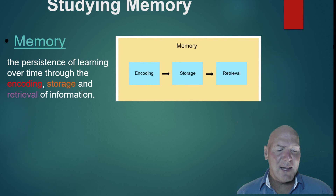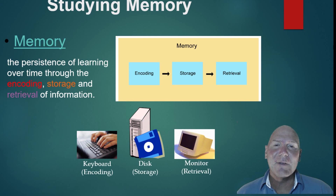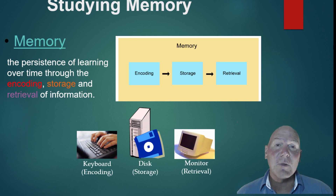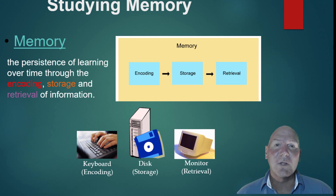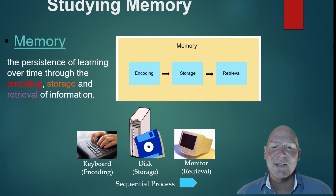It's kind of like a computer system — that was one of the early explanations. You have a keyboard that encodes information, you have a disk that stores it, and then a monitor for output. That's kind of how it works: you encode it, you store it, you retrieve it. Which makes a lot of sense, doesn't it?